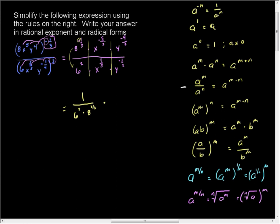And so I need to take negative five-thirds and subtract four-thirds to give me a total of negative nine-thirds. Well, negative nine-thirds is negative three, so this is x to the negative three.